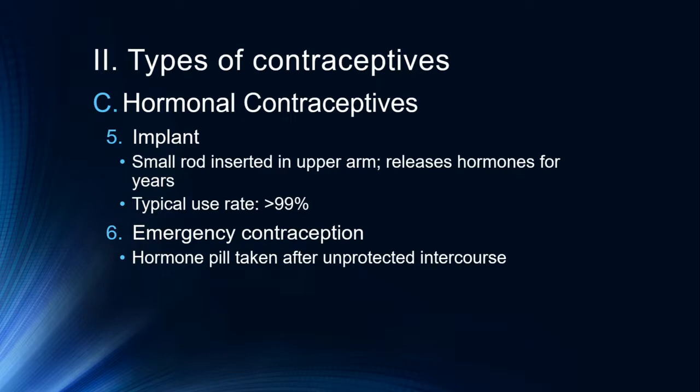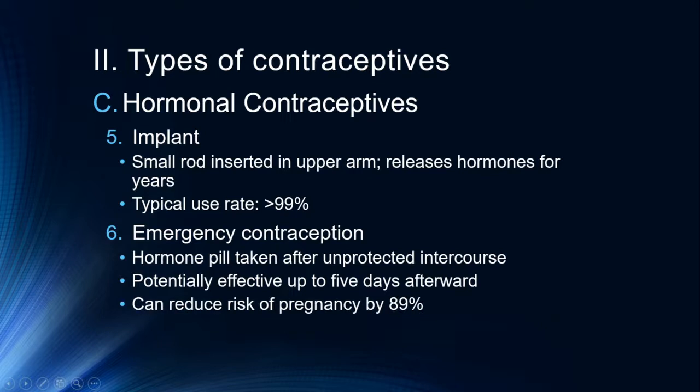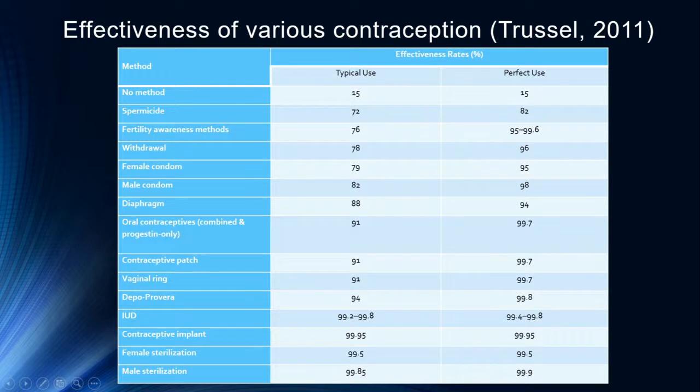Emergency contraception is a hormone pill taken after unprotected intercourse. It can potentially be effective up to five days afterward and can reduce the risk of pregnancy by 89%. There's a lot of controversy about this form of contraception, with some people likening it to abortion — we'll leave that debate for elsewhere. A number of states provide this without a prescription, typically for those 16 or older, though depending on your state and age you may need parental consent. Talk to your pharmacist or look it up online.